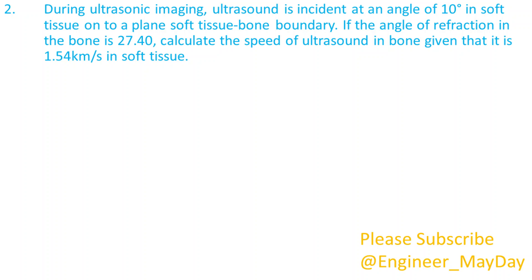Here is a second question. During ultrasonic imaging, ultrasound is incident at an angle of 10 degrees in soft tissue onto a plain soft tissue-bone boundary. If the angle of refraction in the bone is 27.4 degrees, calculate the speed of ultrasound in bone given that it is 1.54 kilometers per second in soft tissue.